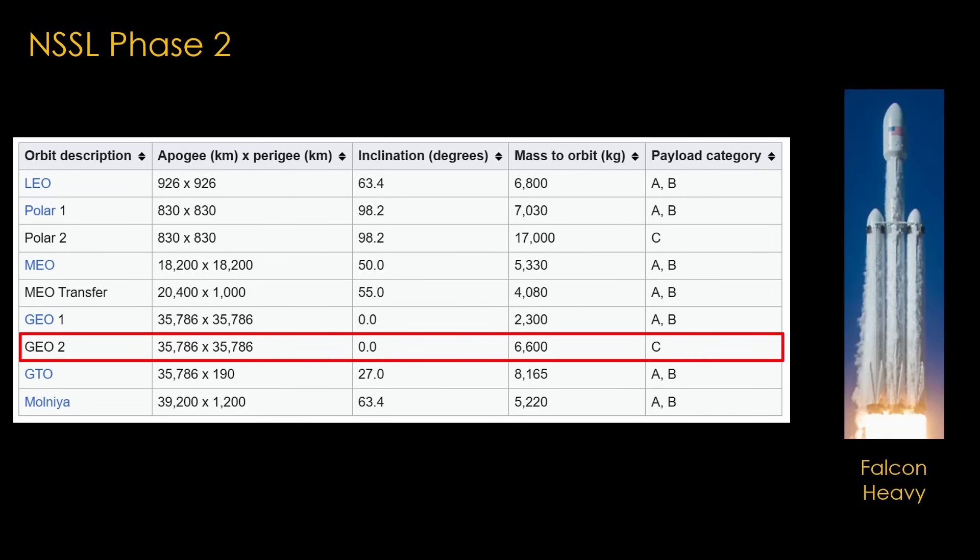The solution is obviously Falcon Heavy, and the Air Force was quick to certify Falcon Heavy after its first successful flight, thereby allowing SpaceX to get 40% of the launches. The remaining 60%, of course, went to ULA.